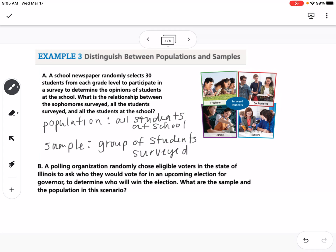Part B says a polling organization randomly chose eligible voters in the state of Illinois to ask who they would vote for in an upcoming election for governor. The population is the group of people that we want to know something about. If they're trying to determine who's going to win the election, the population would be all eligible voters in Illinois.